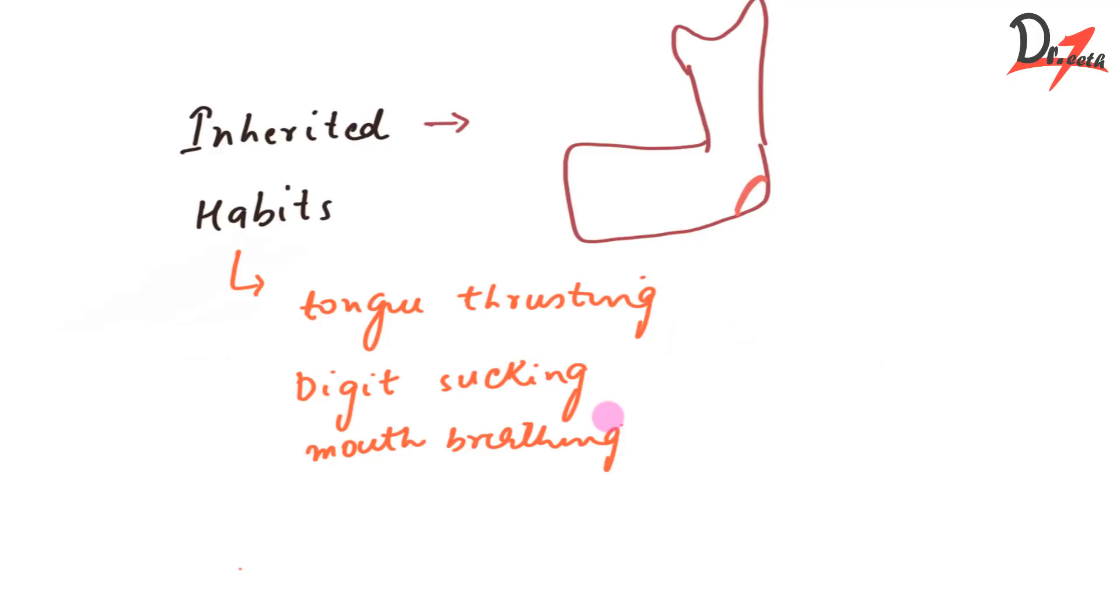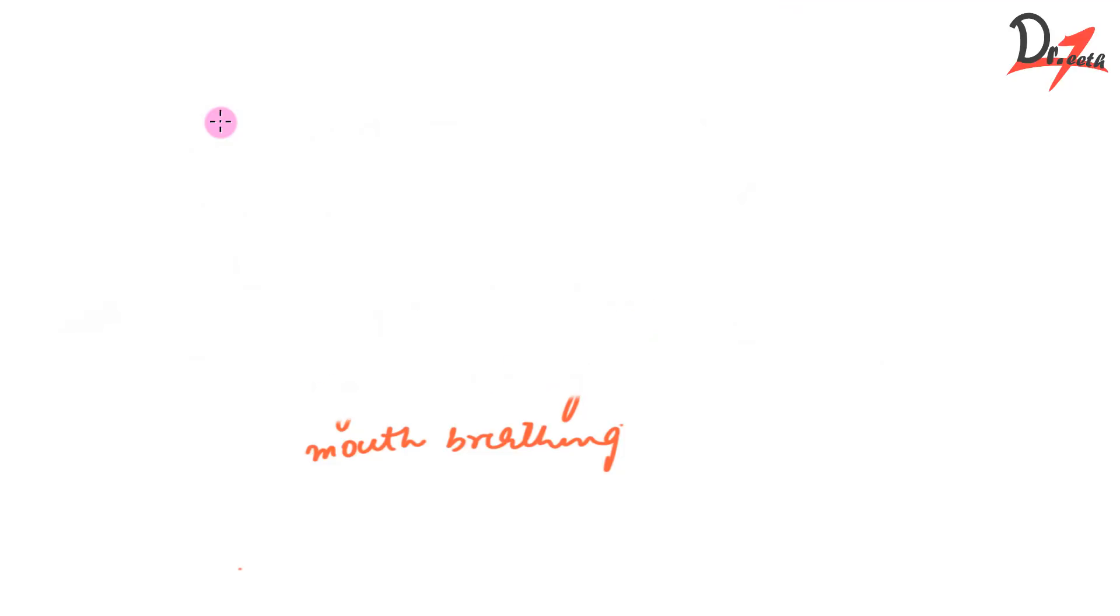Now that we have learned that the open bite could be due to two reasons, skeletal or dental, we'll see the features of each one of them separately. For example, if a person or if a child or adolescent comes to your clinic and let's say he has dental open bite, what features will you see? And if he has skeletal open bite, we are talking about the anterior open bite. So what features we will see in each of these cases?